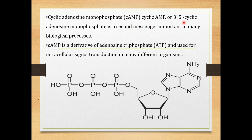Cyclic AMP, or cyclic adenosine monophosphate, also written as cAMP or 3'-5' cyclic adenosine monophosphate, is a second messenger important in many biological processes. We'll discuss what a second messenger is, and where cyclic AMP is formed from.